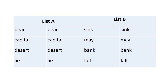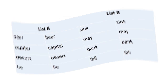More homonym examples: 'capital' — a city or financial resources. 'Desert' — a dry landscape or to abandon. 'Lie' — to be in a horizontal position or to tell an untruth. 'Sink' — a basin or to go below the surface. 'May' — one of the months of the year (capitalized) or a modal verb showing possibility. 'Bank' — a financial institution or the coast beside a river. 'Fall.'